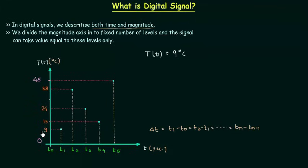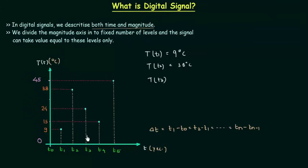We have not discretized the magnitude axis, so the temperature can take any value from 0 to 45 — every value is allowed. So 9 degrees Celsius is absolutely allowed. For t2 we have 38 degrees Celsius, for t3 we have 24 degrees Celsius, for t4 we have 15 degrees Celsius, and for t5 we have 45 degrees Celsius.